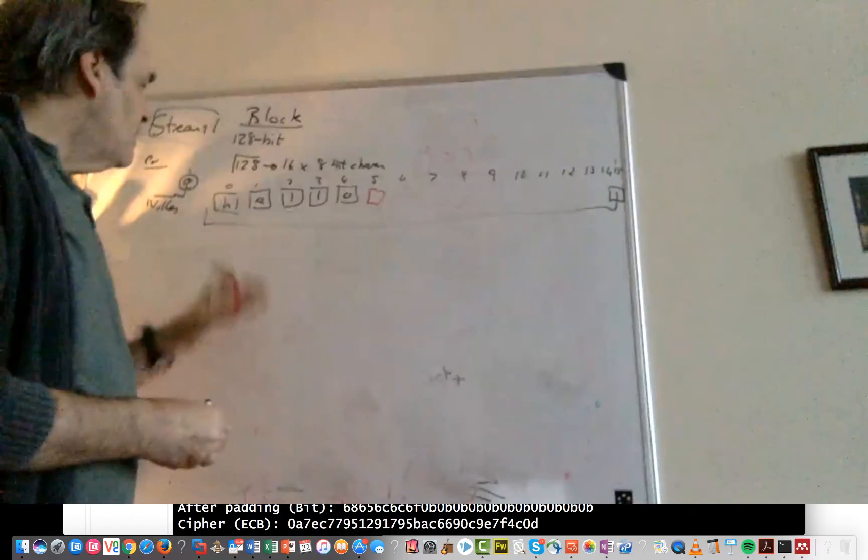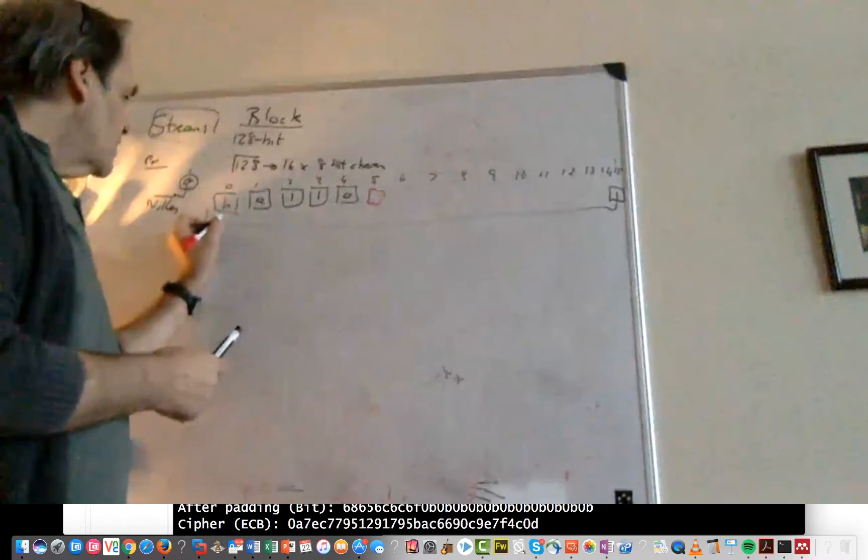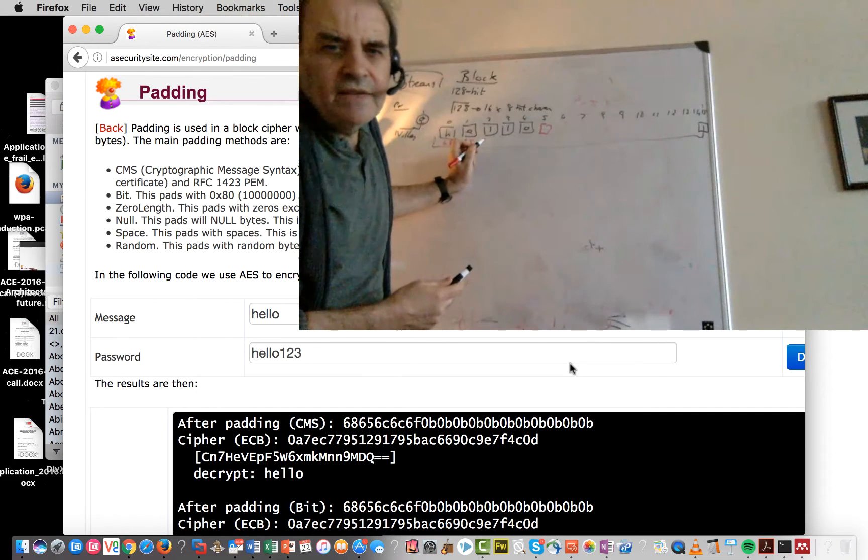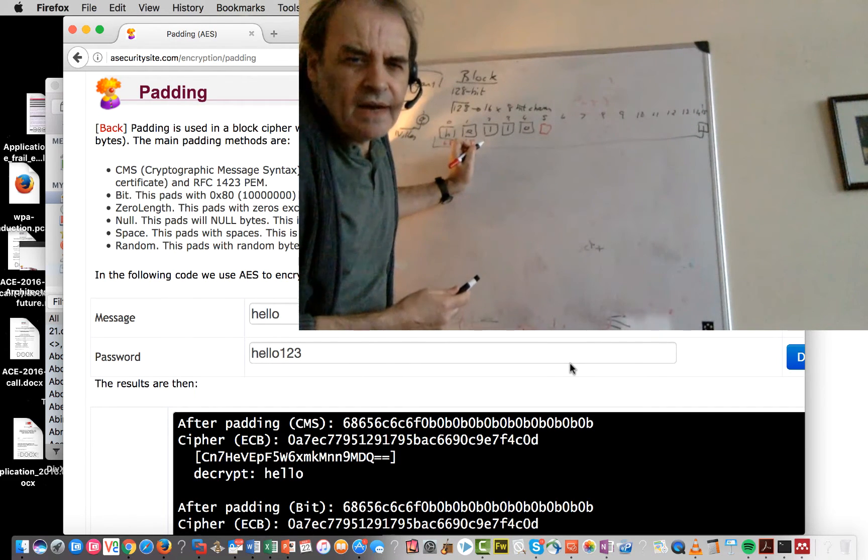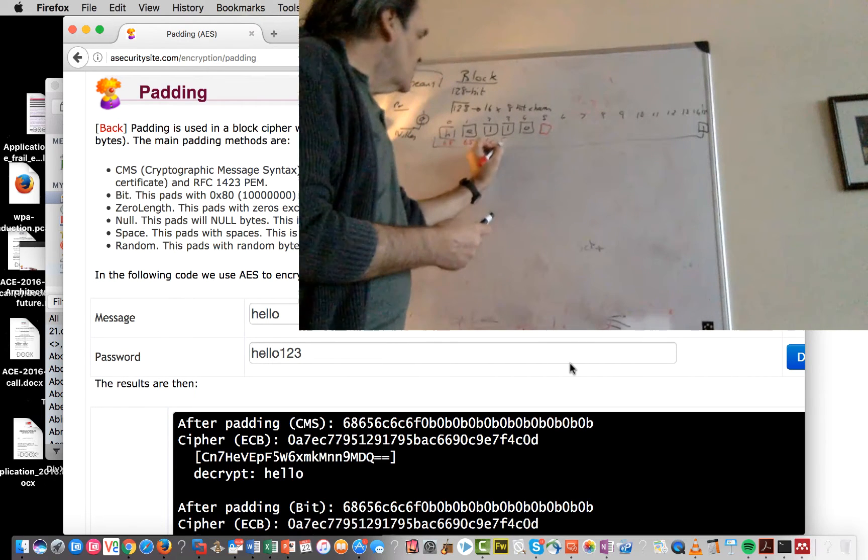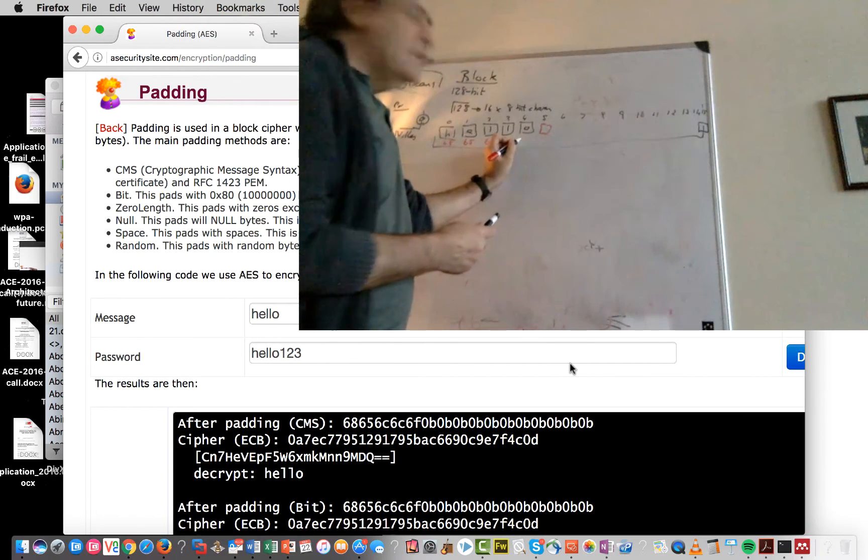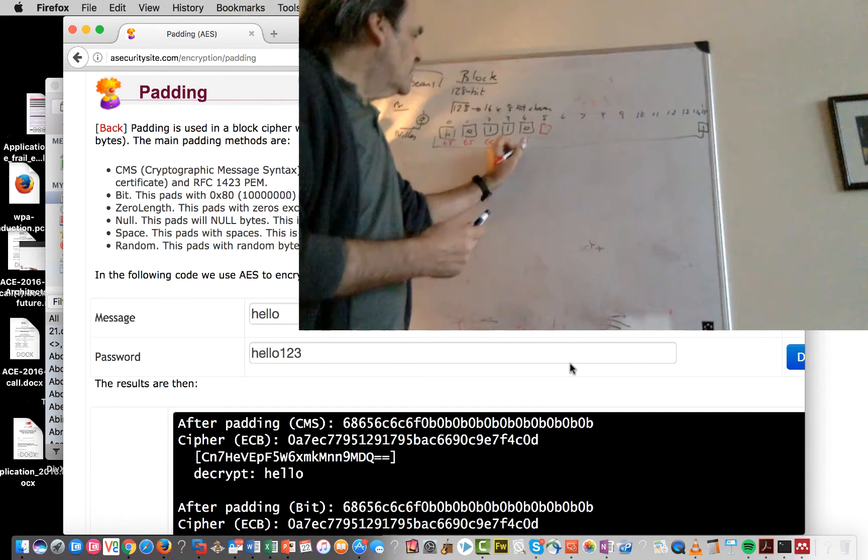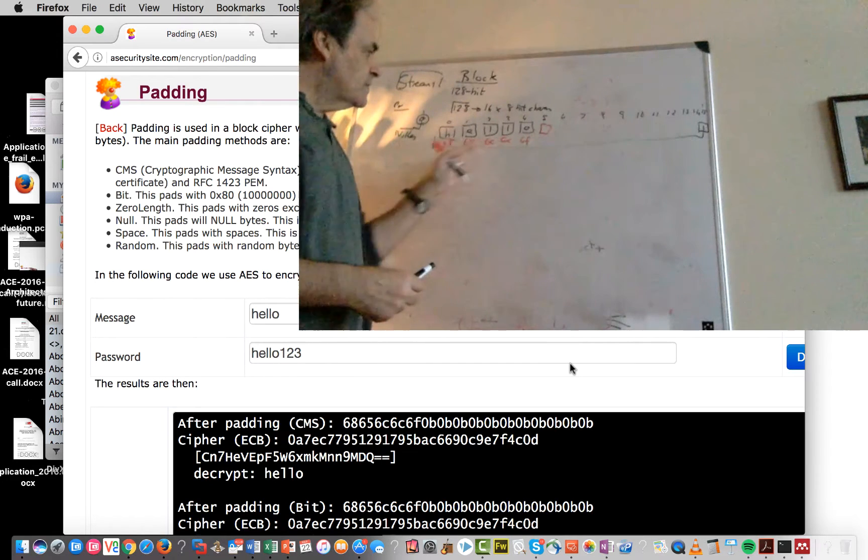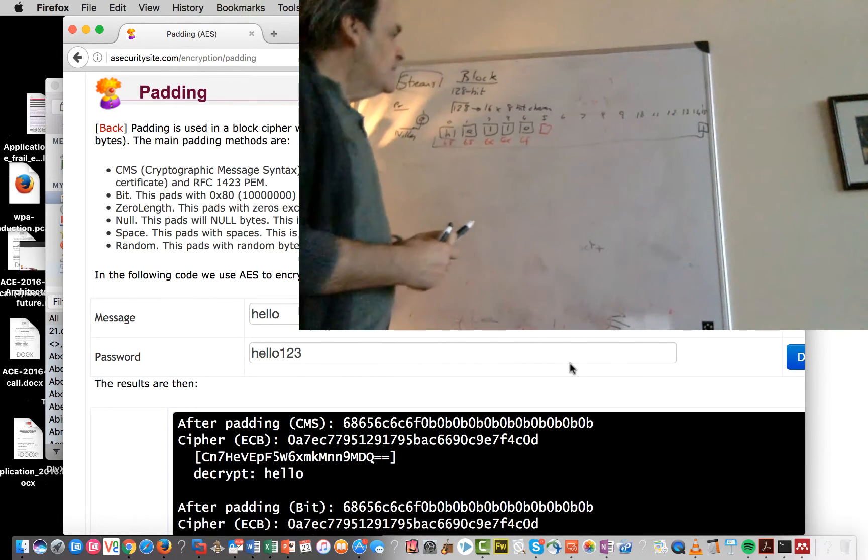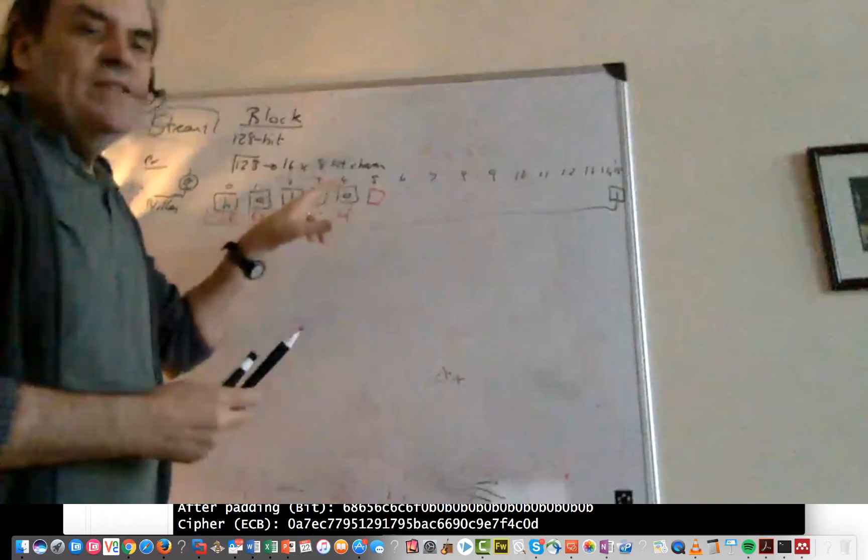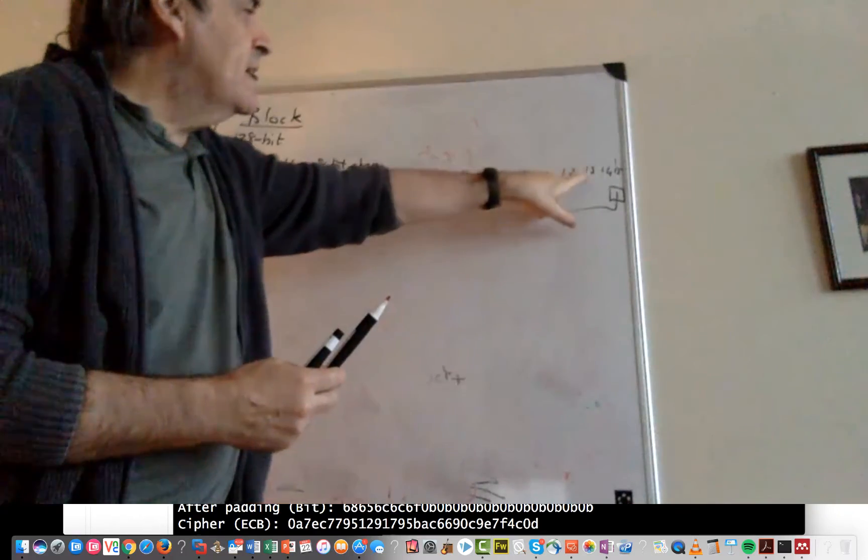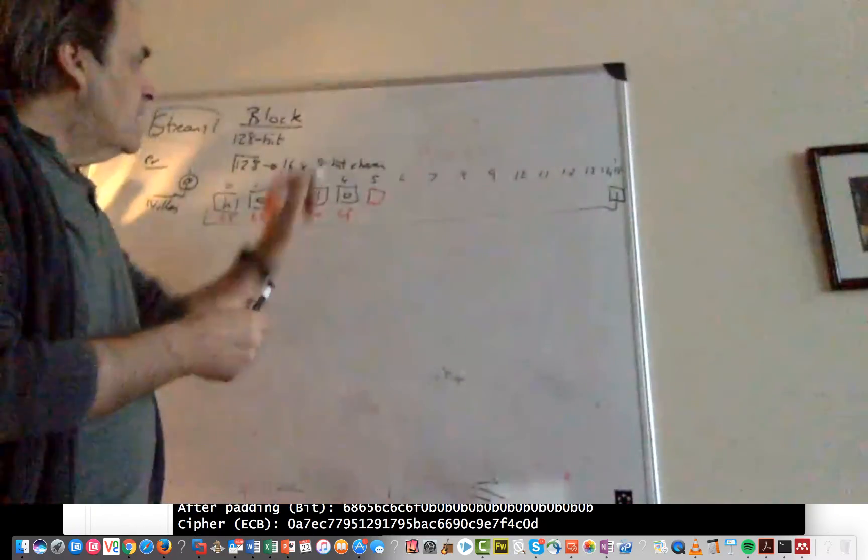So in this case we have hello so this is a 68, 65 and then for an L we have 6C, 6C and then an O is a 6F. Okay, so that's the hex values of each of our characters. We then count the number of bytes that are empty: 1, 2, 3, 4, 5, 6, 7, 8, 9, 10, 11.